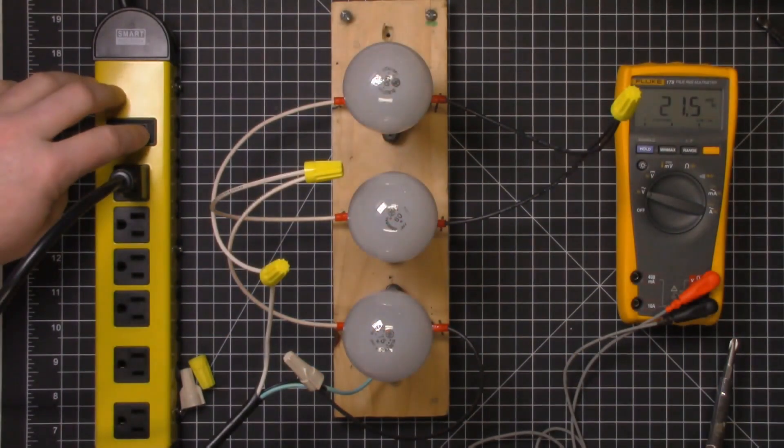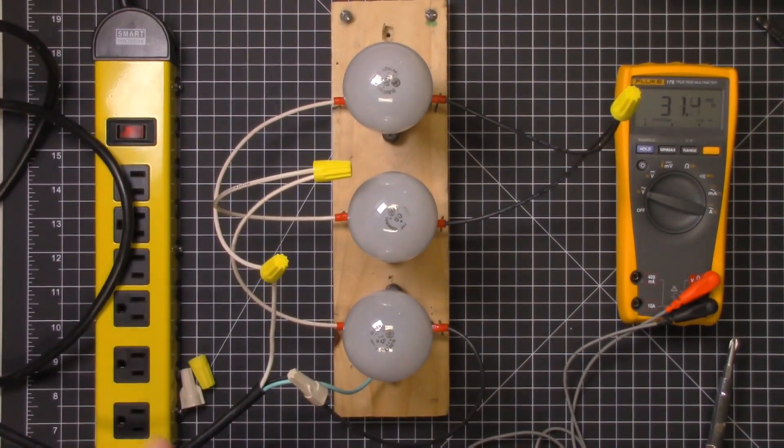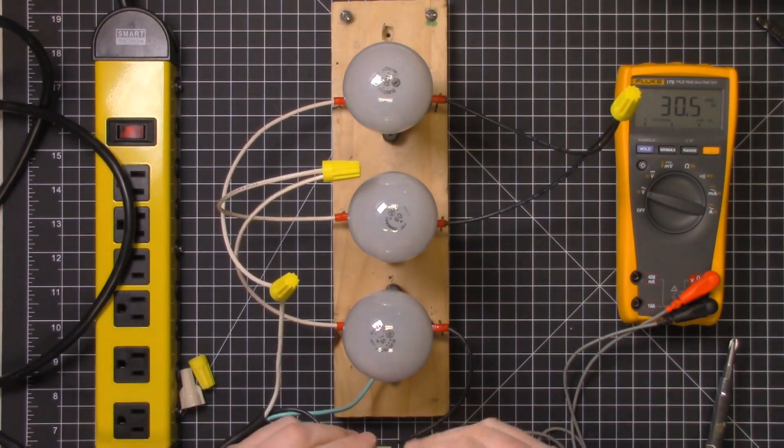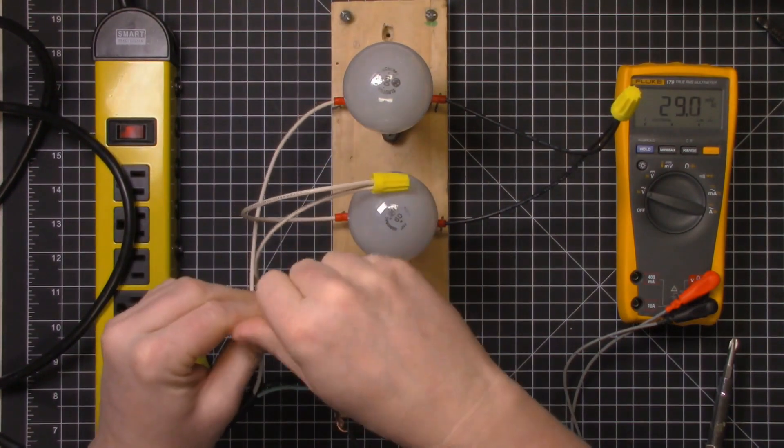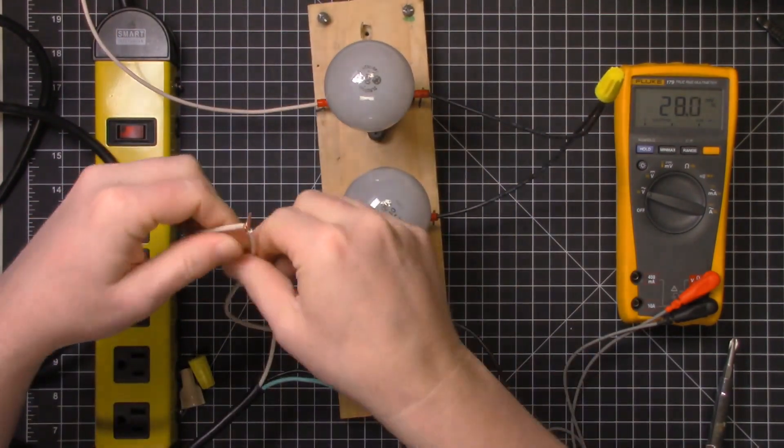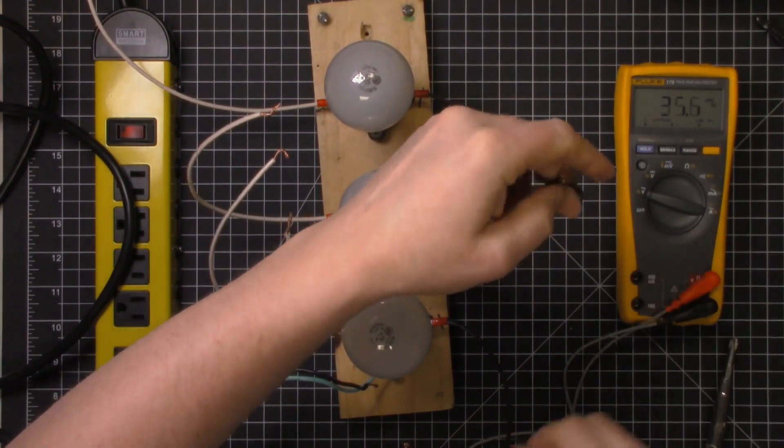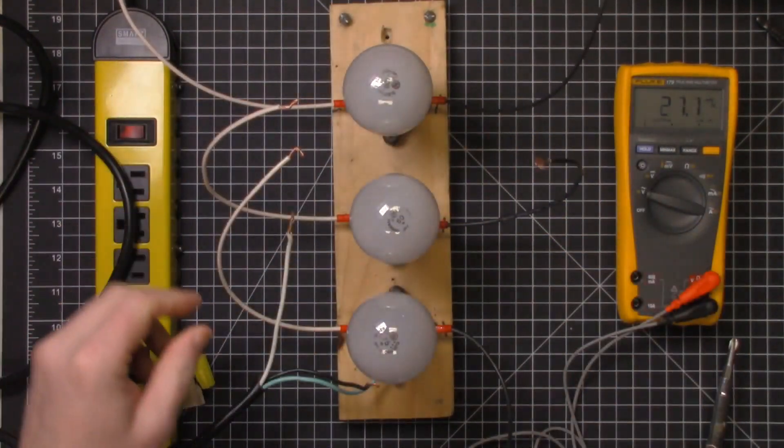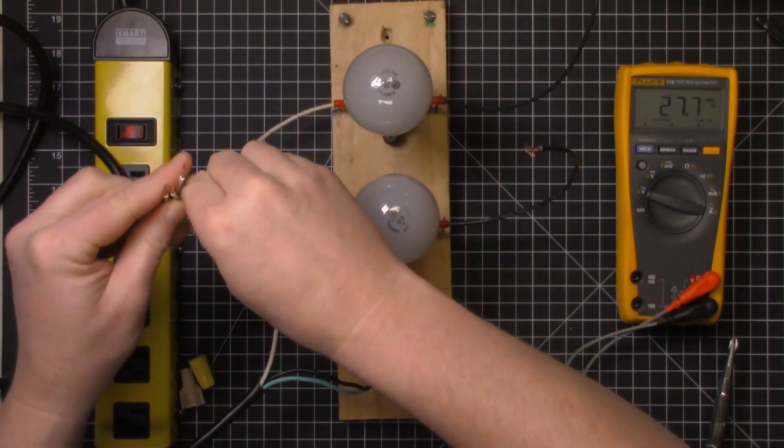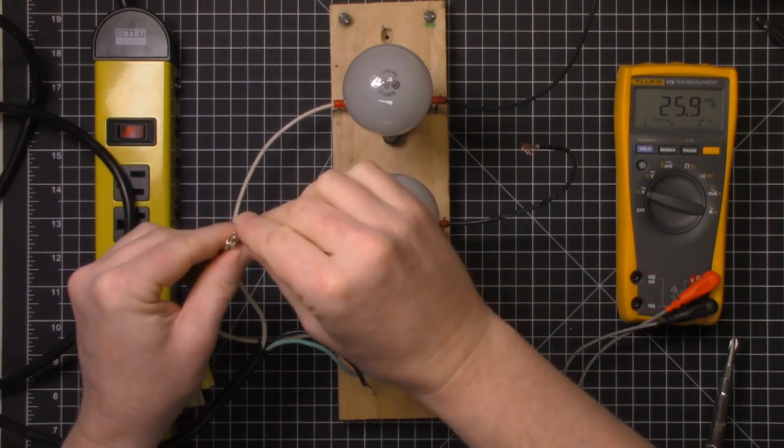So I'm going to go ahead and turn it off, unplug it, and then we're going to wire this up in a parallel configuration. So I'll just break all those connections. So in a parallel, everything is connected directly to the source. So what we're going to do now is take all of these wires and we're going to connect all of them together.